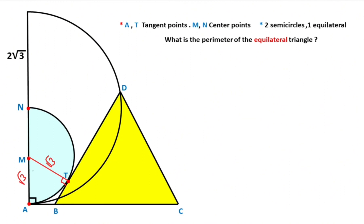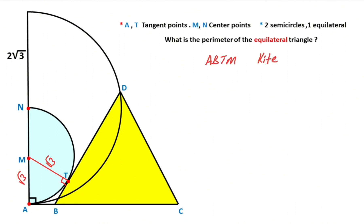If we focus on this quadrilateral, notice that these two sides are equal and these two parts are equal to each other. That means quadrilateral ABTM is a kite. Therefore, if we connect its vertices, we get an angle bisector line. This blue line is an angle bisector line, which means these angles must be equal to each other and also these angles must be equal to each other.